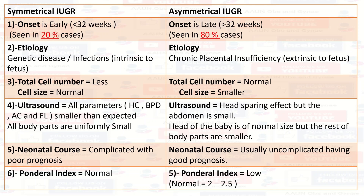In symmetrical IUGR, the total cell number is less and cell size is normal. In asymmetrical IUGR, the total cell number is normal and cell size is smaller. On ultrasound, in symmetrical IUGR, all parameters are smaller than expected and all body parts are uniformly small. Whereas in asymmetrical IUGR, there is a head-sparing effect — the head is of normal size but the rest of the body parts are smaller.